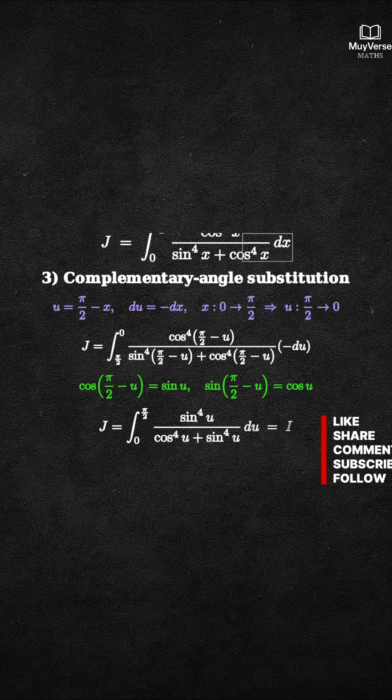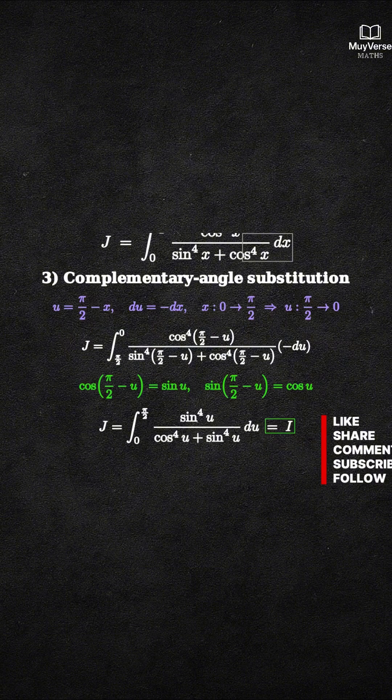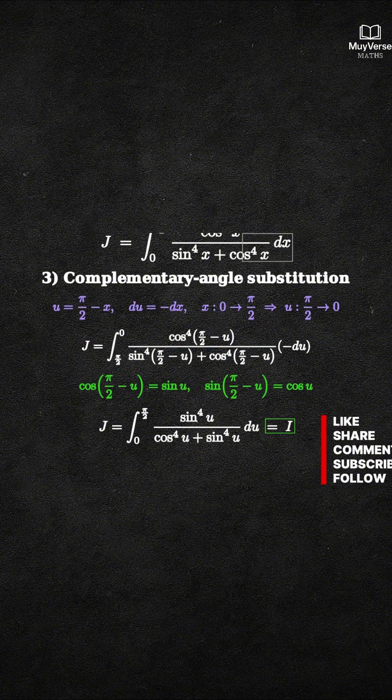Therefore J becomes the integral from 0 to pi over 2 of sine to the 4th of u over cosine to the 4th of u plus sine to the 4th of u, du, which is exactly I. So J equals I.